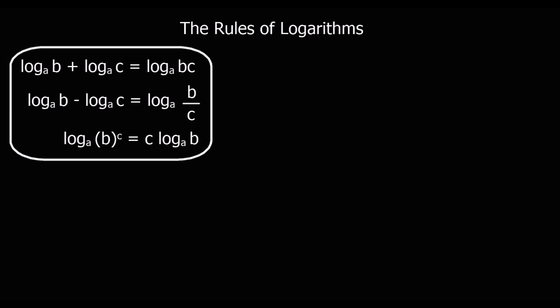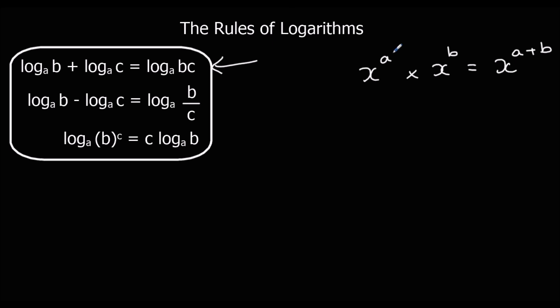The rules of logarithms are the same as the rules of indices. When you multiply two indices, like x^a times x^b, you add the powers to get x^(a+b). You need to think of logs as the powers — the log bits represent the powers.